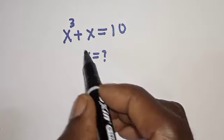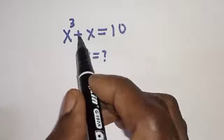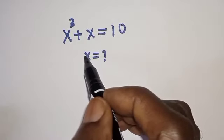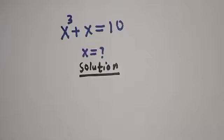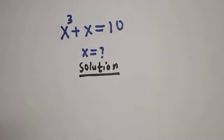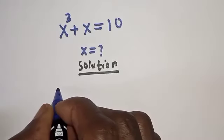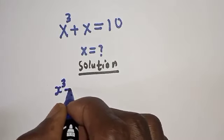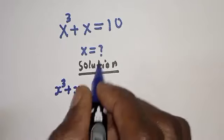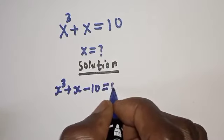Hello, welcome to Magis. In this class, we want to find the value of s from this equation: s raised to power 3 plus s is equal to 10. Like, share, comment and subscribe. Solution: we have s raised to power 3 plus s minus 10 is equal to 0.